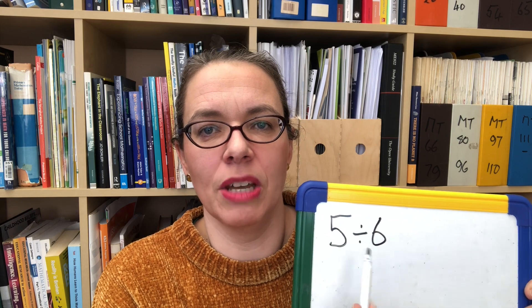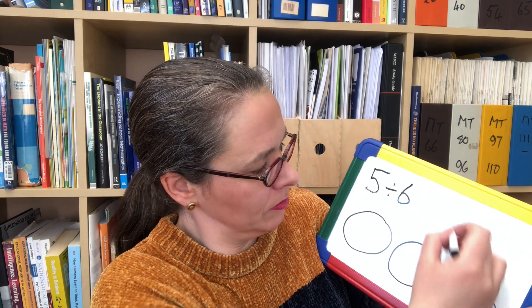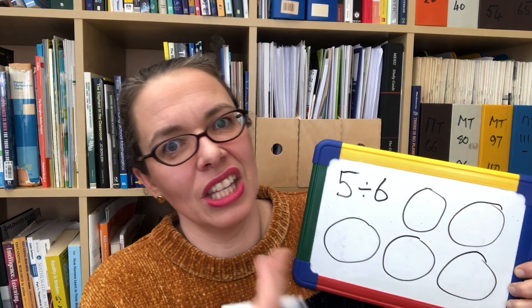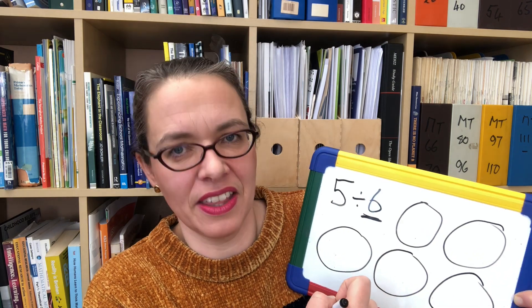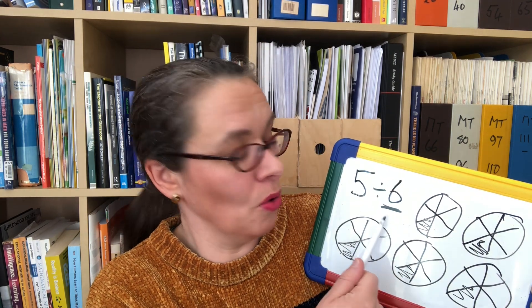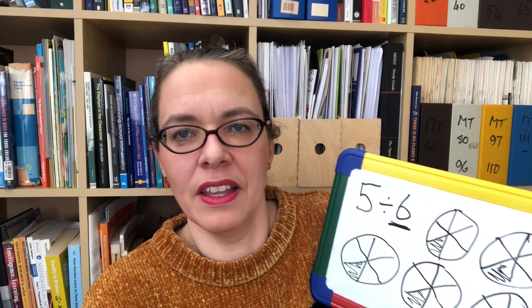Let's look at another calculation where you're dividing a smaller number by a larger number. This one is five divided by six. Let's draw five pizzas and try to share them out fairly. Over a few questions, children should come to recognise that they want to split every pizza into that many parts. Each of your six people can go round and take a slice from each pizza, so the answer to that question is five sixths.